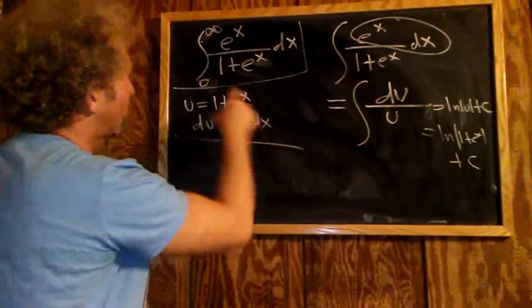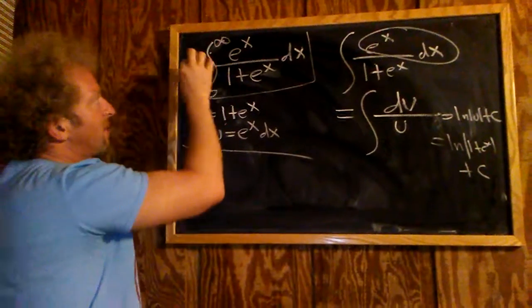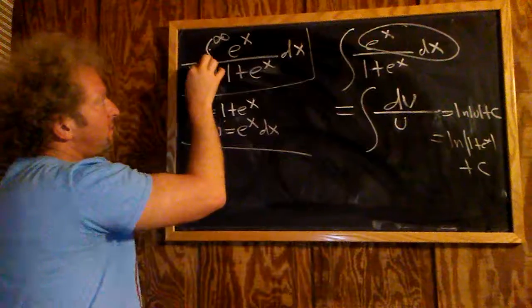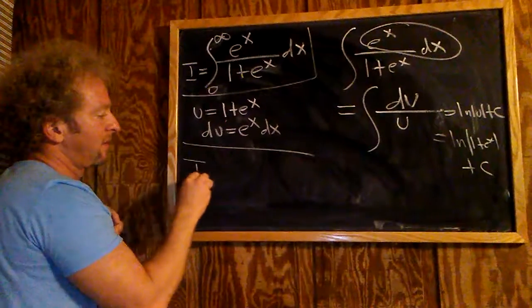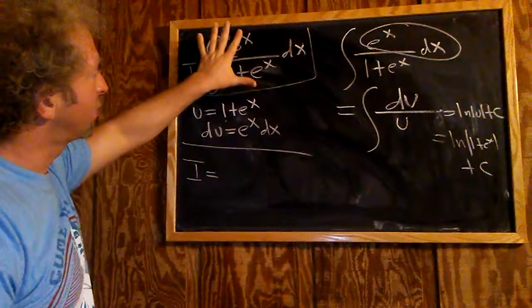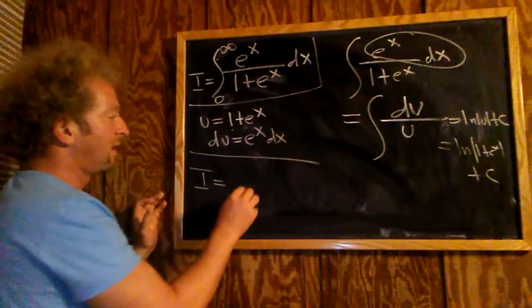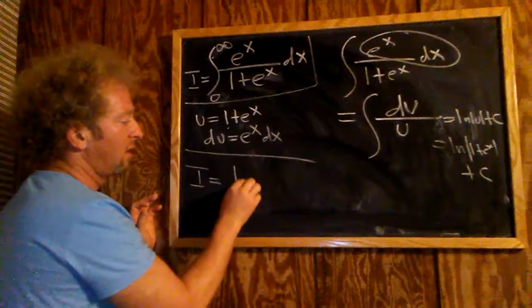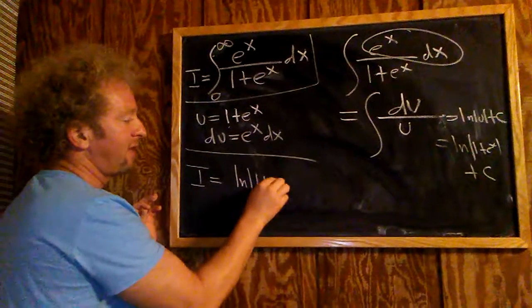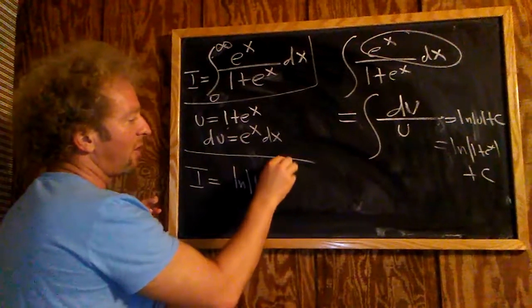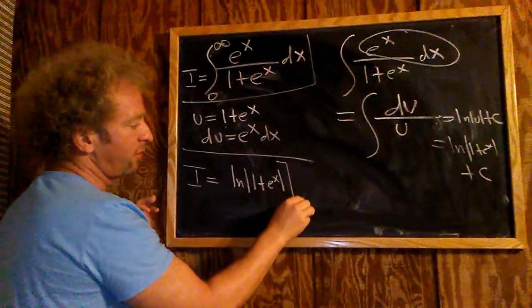Alright, now imagine the problem at hand. So our original problem is this. I'm going to call it something, and we'll call it i. So i is equal to, well it's this. So when you integrate this, without these limits, you just get this. But this is definite, so it'll be ln 1 plus e to the x. You don't need the plus c. And we're going from 0 to infinity.